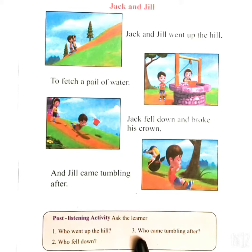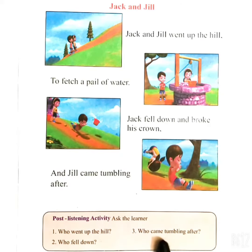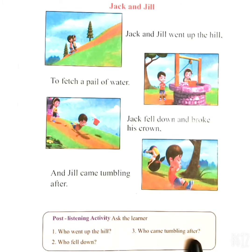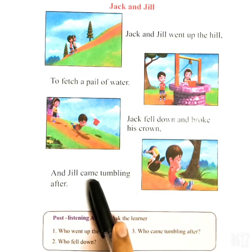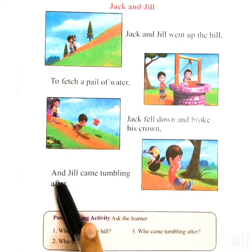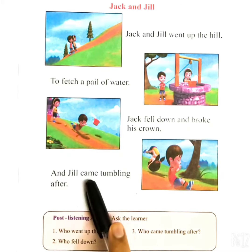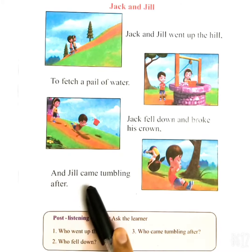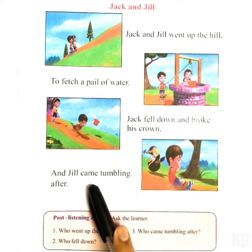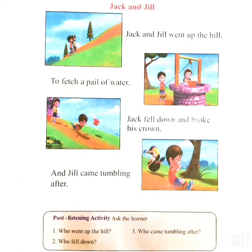Now, the last question is: who came tumbling after? Kids, we read in the last line of the poem that Jill came tumbling after. So, the answer will be: Jill came tumbling after.